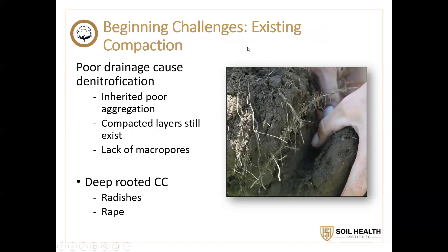Other challenges: we're dealing with compaction — you've inherited a compacted layer, you have lack of pore space, especially micropores. What can you do? If you know you have compaction or suspect you do, make sure you put some kind of deep-rooted cover crop in your mix. Don't just go with cereal rye or wheat alone. Make sure you have some radishes, some rapeseed — any kind of brassica is really good at helping to break up that hard pan, poke holes through the system, and help get carbon down into the soil profile to ease up on compaction, so you can have continuous pore space year in and year out.